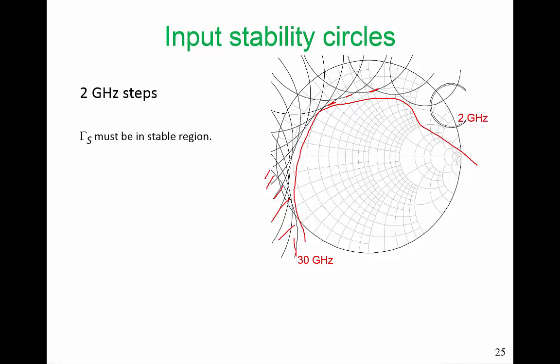But Gamma S is not going to radically change. So realistically, we really need to have a Gamma S that's inside here. When we're out of band, we want to make sure that our Gamma S is well away from these circles. We want to make sure that our amplifier is stable out of band as well as in band.